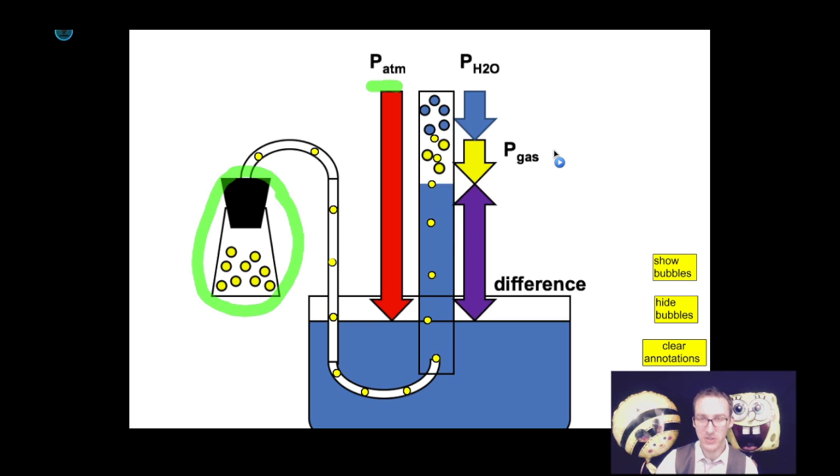All right, now to effectively use Dalton's law of partial pressures here, we need to make sure that the atmospheric pressure outside of the collection vessel matches the combined pressure of the gases inside the collection vessel. And we can do that by making sure that the water level inside the collection tube and outside the collection tube is at the same level.